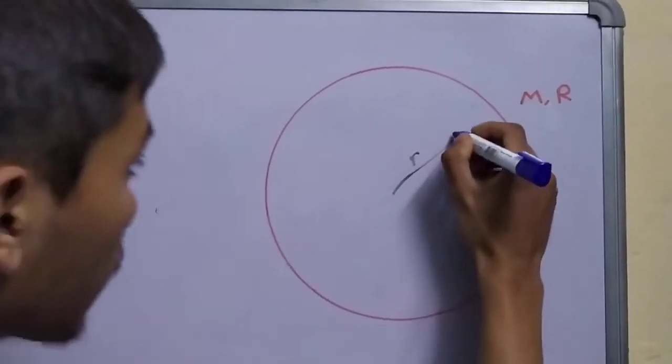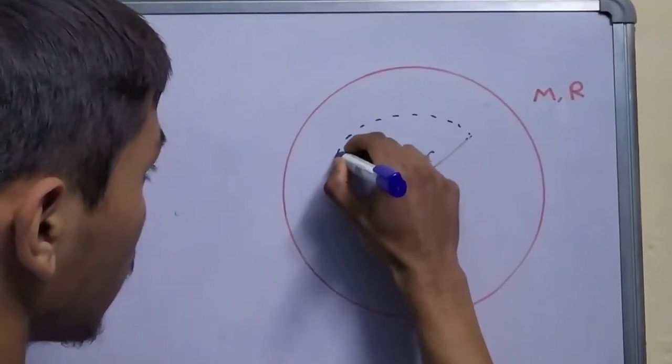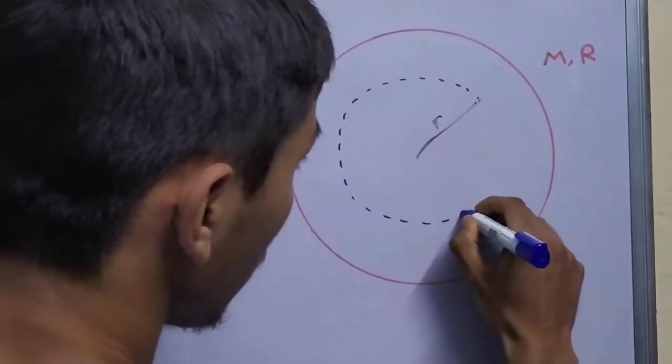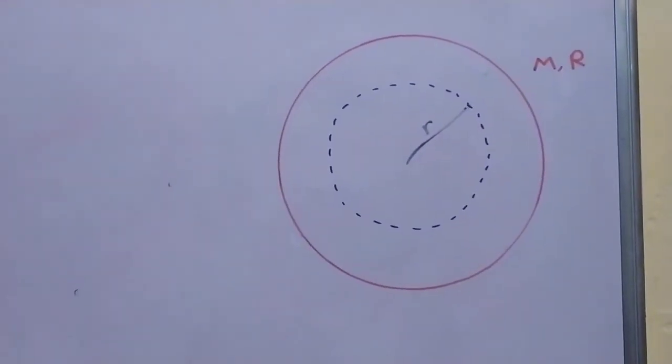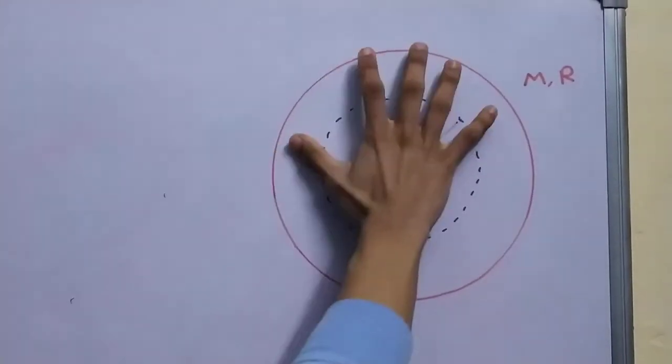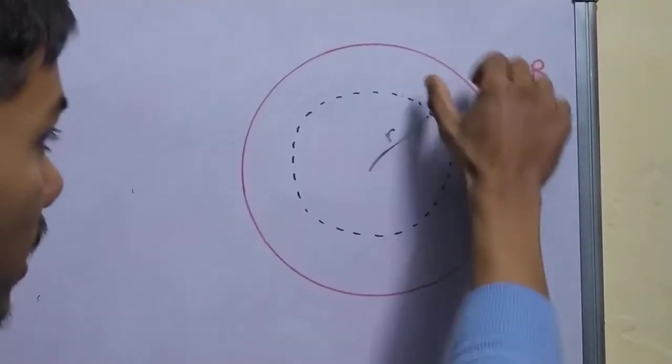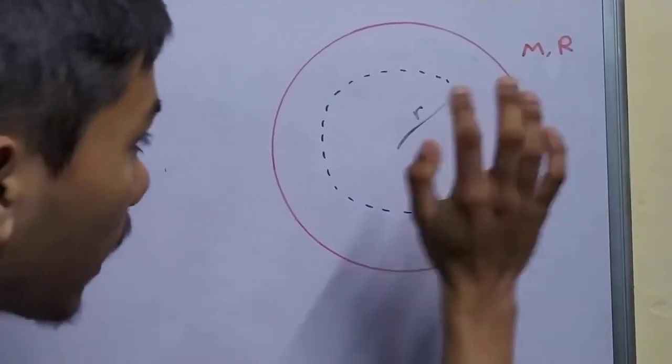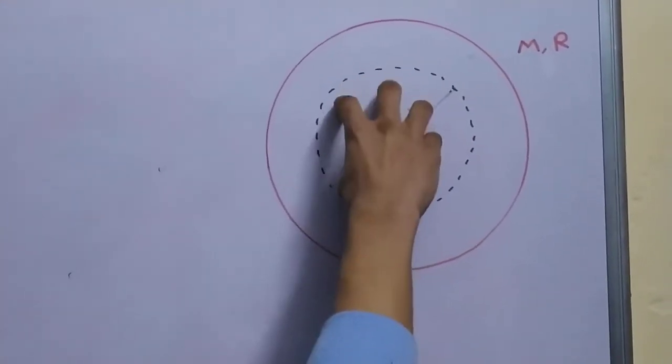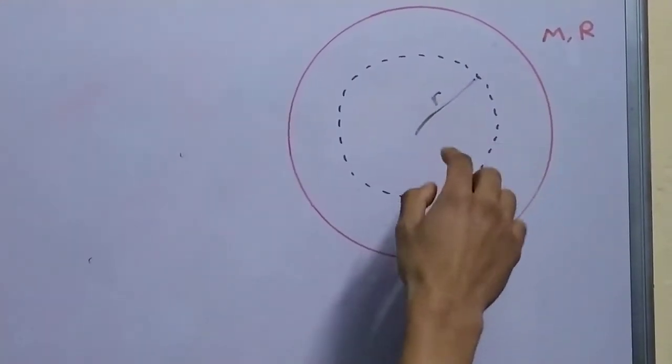We first start off by constructing a smaller circle inside. So we have divided this sphere into two parts, this thick shell, the region between blue and red, and this smaller sphere, the blue region.